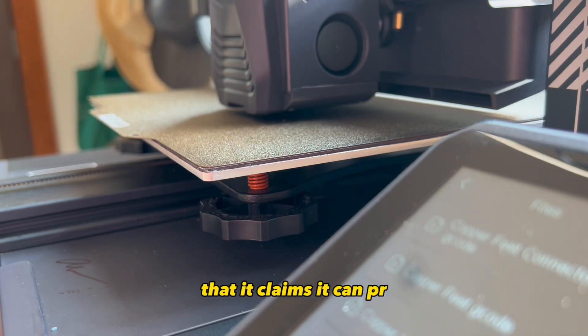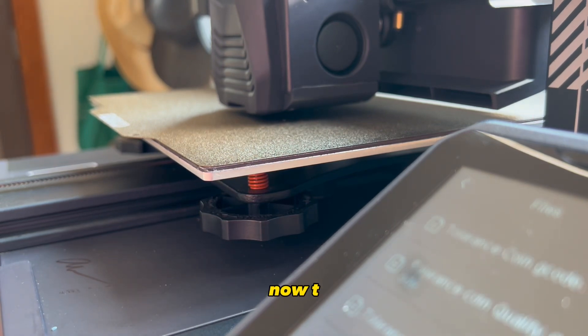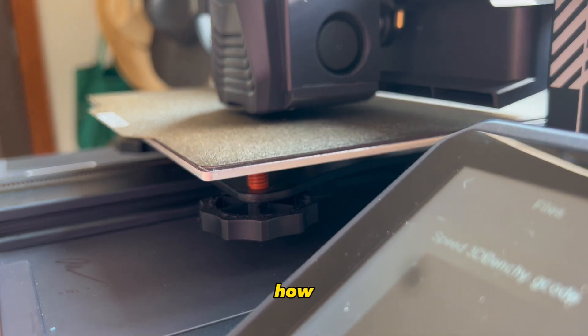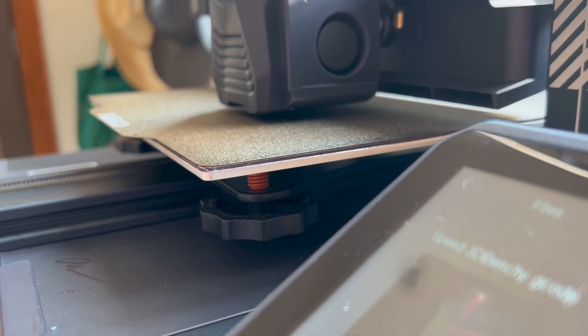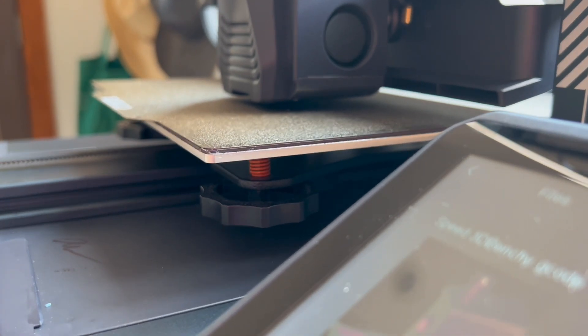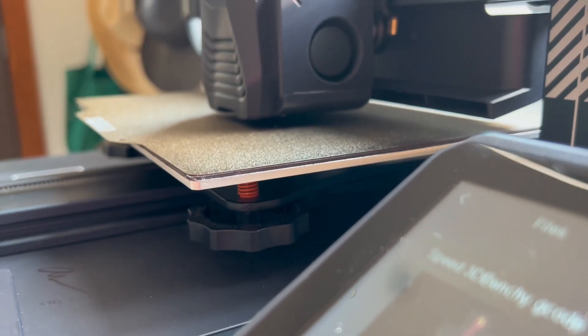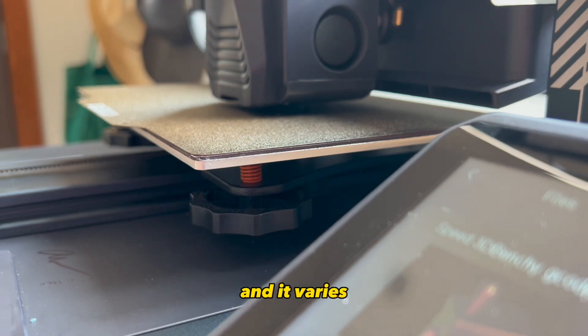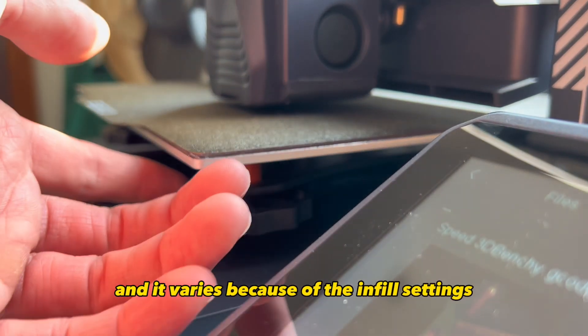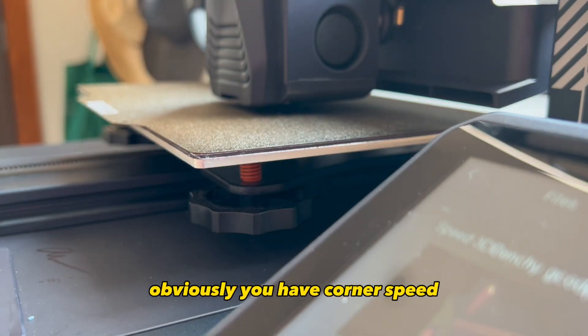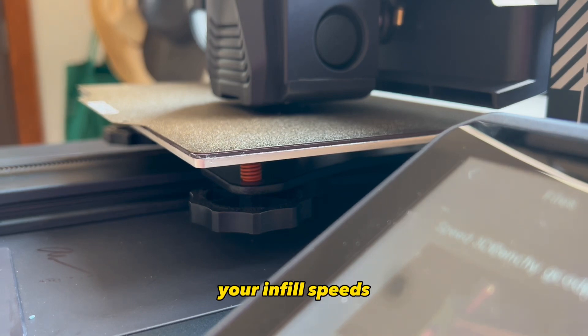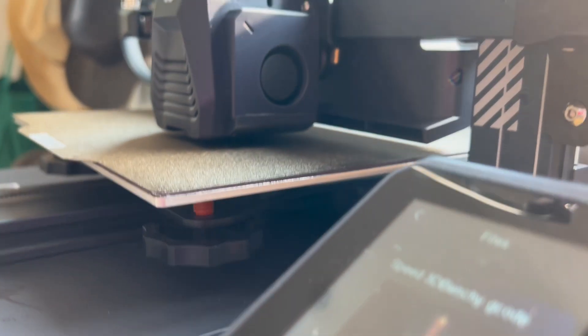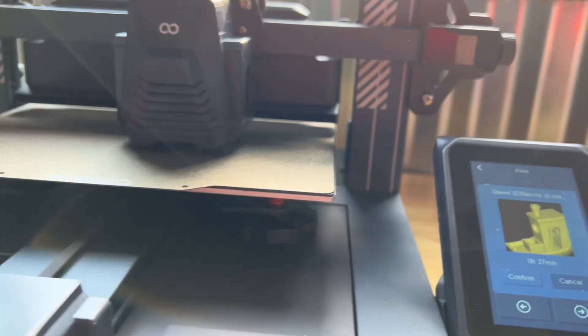I'd like to say that it claims it can print at 500 millimeters a second. Now this may be true, however it's not true 100% of the time. Usually it's printing around 250 millimeters per second to 300 and it varies because of the inflow settings. Obviously you have corner speeds, your infill speeds, your shell speeds, it all just varies.